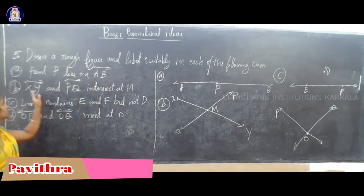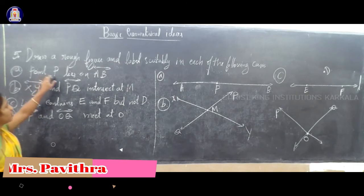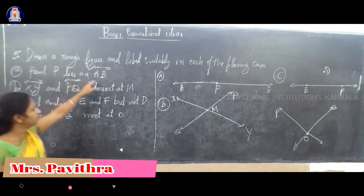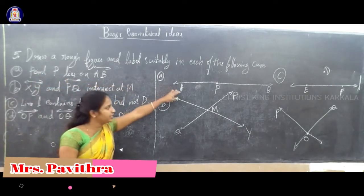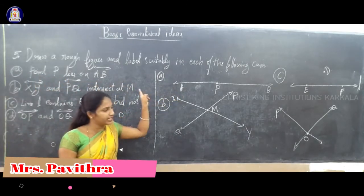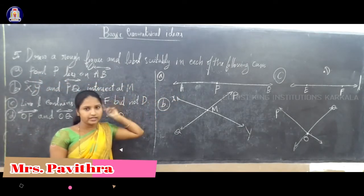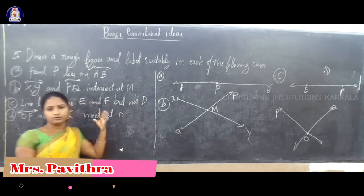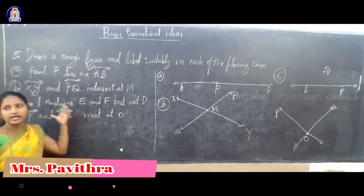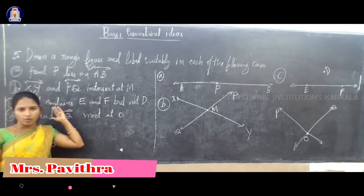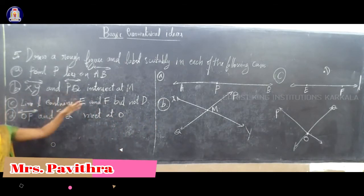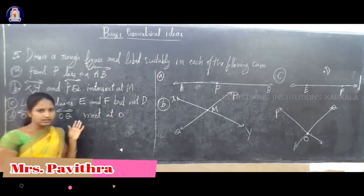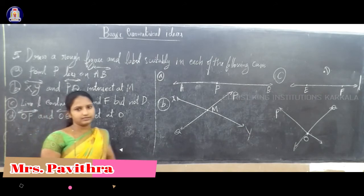So this is the answer — point P on line AB. The figure shows how to draw and represent points on lines.